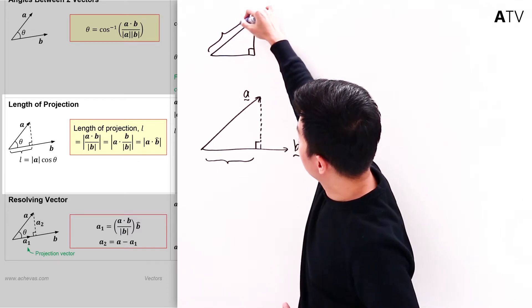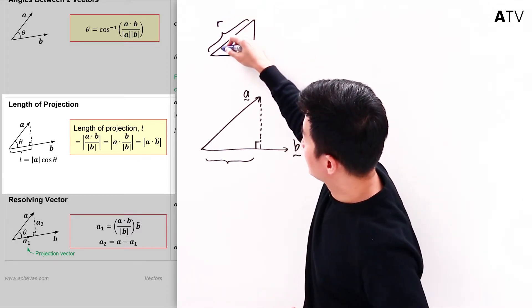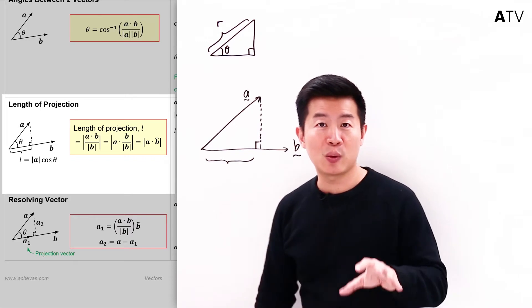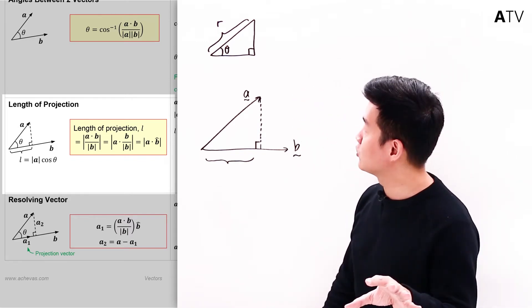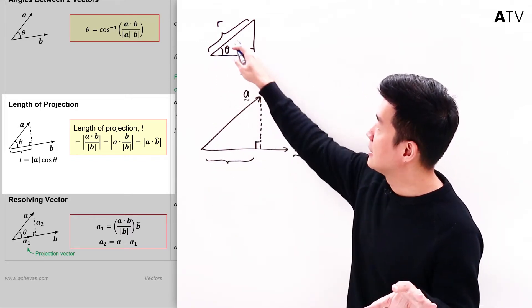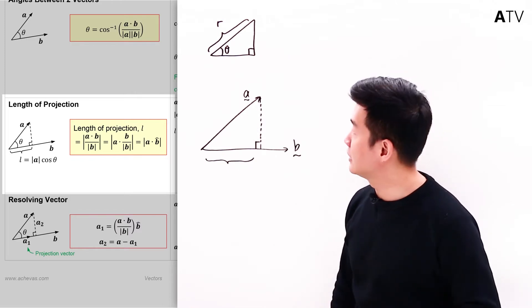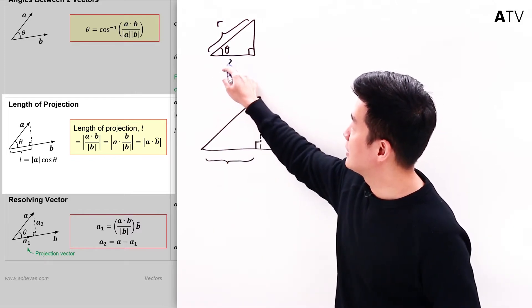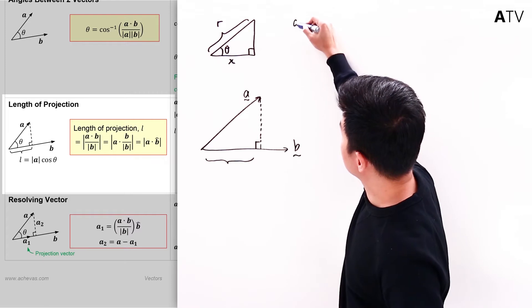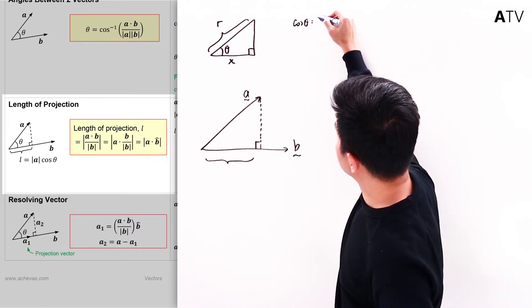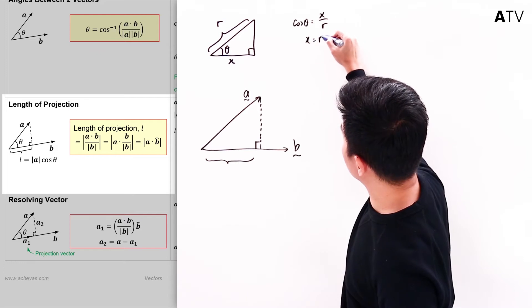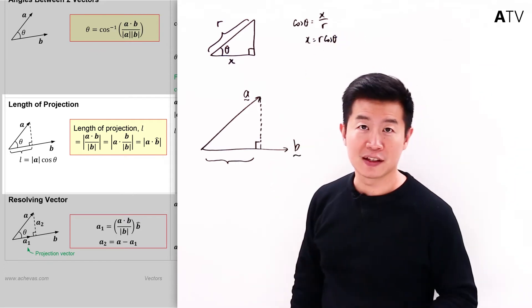if I were to say that the hypotenuse here is R, and if I were to tell you that this angle here is theta, what I want you to first try to do for me is to derive this distance in terms of R and theta. To find this distance, let's say this is X, which means that cosine theta is equal to X over R. So X is going to be R cosine theta.